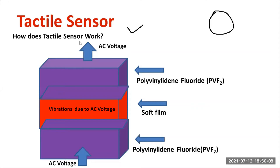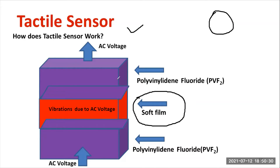Let us talk about the working of a tactile sensor. Before explaining the working, I want to introduce the construction. The tactile sensor comprises of polyvinyl iodine fluoride (PVF2). There is a sandwich layer of PVF2 with a soft film. The soft film is a sensitive material, arranged in a sandwich configuration — PVF2 on the top and bottom layers, with the soft film in between.